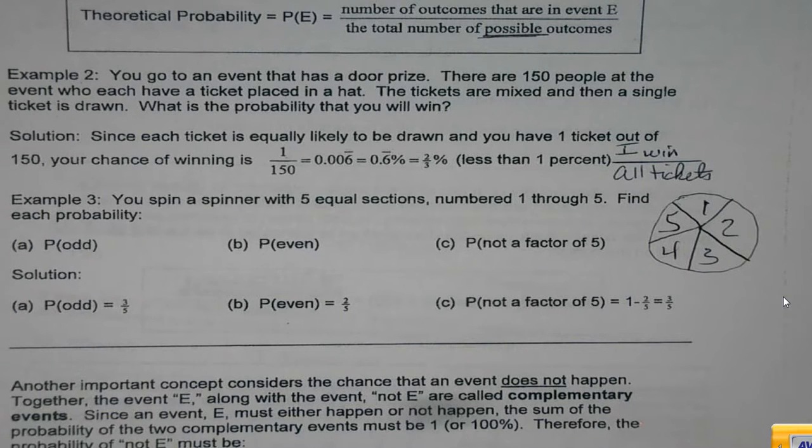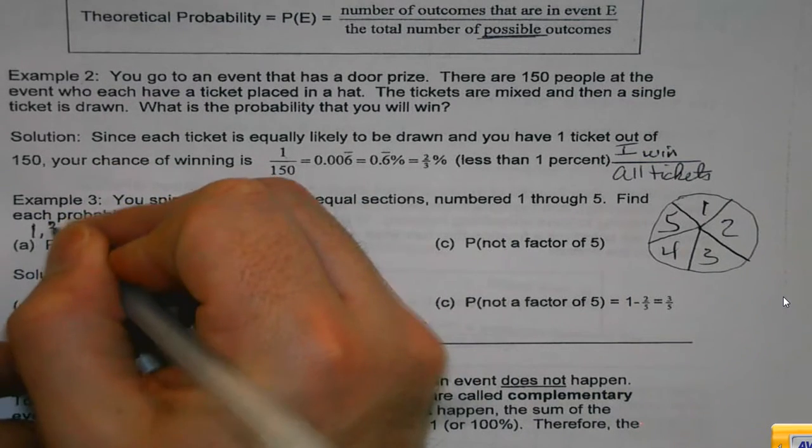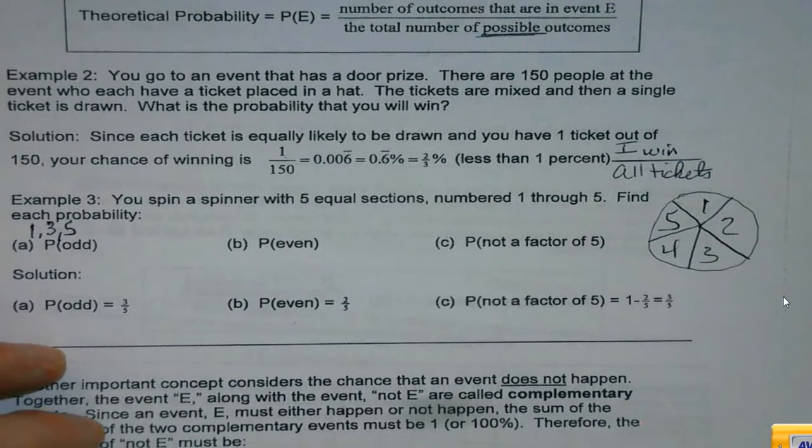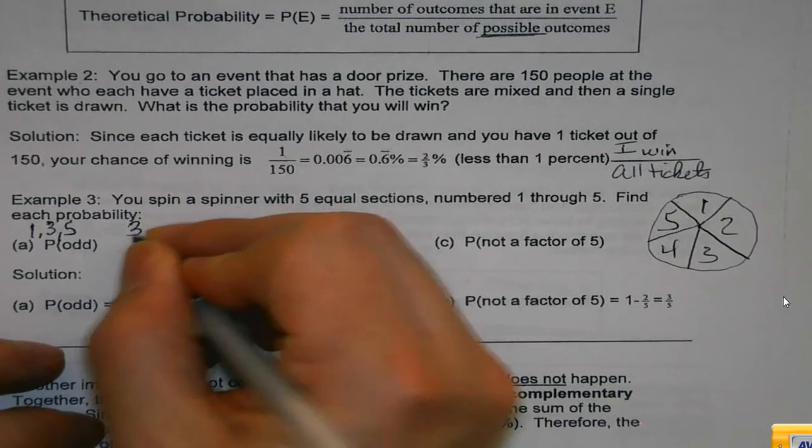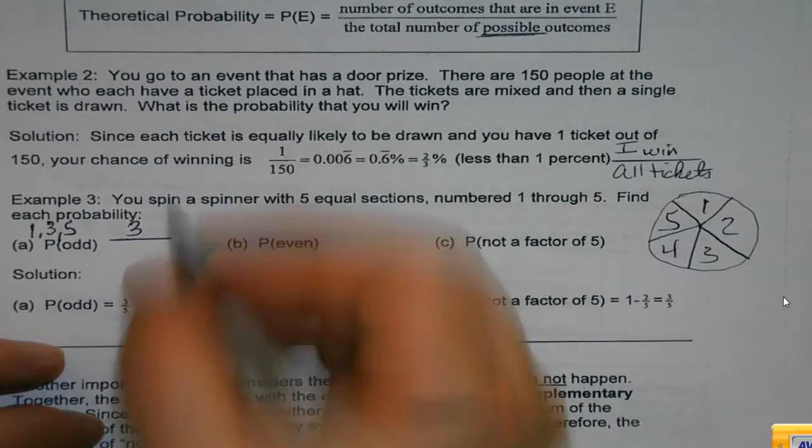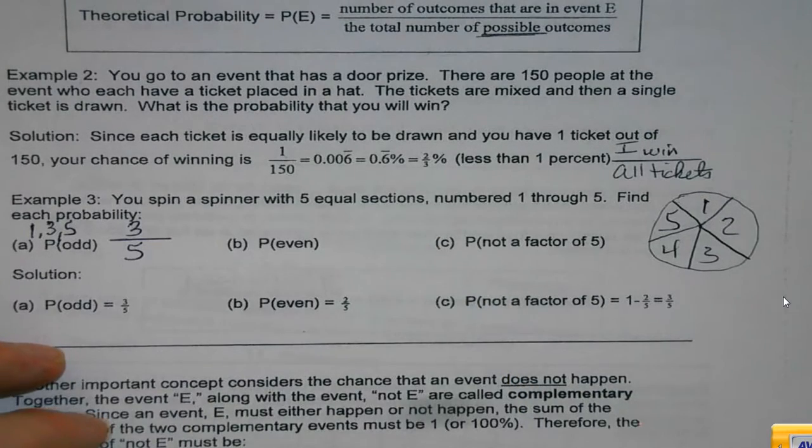Find the probability of getting an odd number. So again, the odd numbers here would be one, three, and five. Those are my successes, and I have three of those. Total number of places on the spinner, five, so my probability is three out of five.